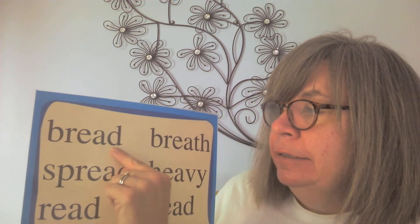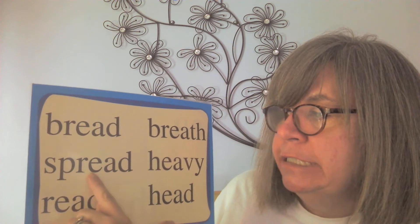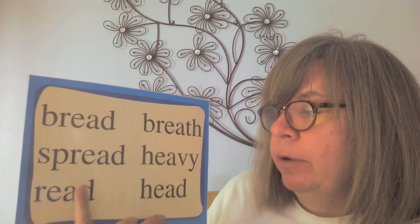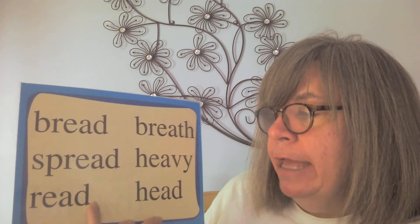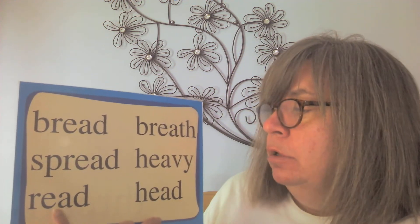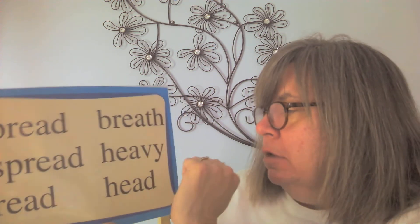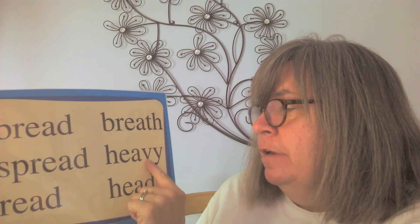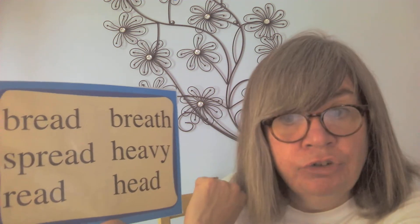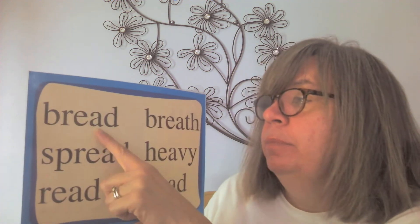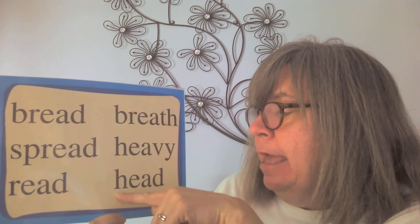BR-EA-D — bread, like on your sandwich. SP-R-EA-D — spread. Bread and spread, they rhyme! R-EA-D — read, as in 'I read that book.' That can also say 'read,' but because we're practicing EA as /ĕ/, this says 'read.' BR-EA-TH — breath, as in 'I took a breath.' This is a two-beat word: H-EA-V-Y — heavy. And the last one: H-EA-D — head. Now read all the EA-as-/ĕ/ words with me: bread, spread, read, head, heavy, breath. Good job!